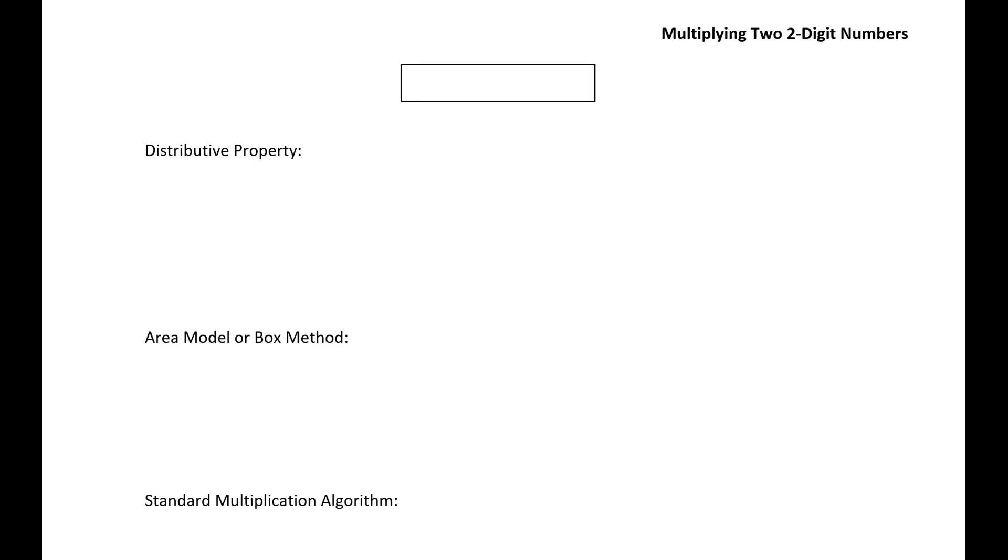Hi, this is Mr. Bledsoe, and in this video we're going to look at the standard algorithm for multiplying two two-digit numbers and we're going to see why it's just an example of the distributive property of multiplication. So we're going to look at this multiplication problem, 37 times 29.